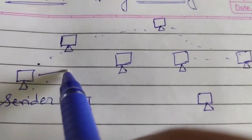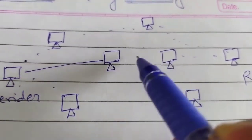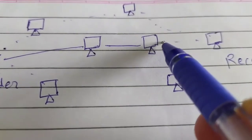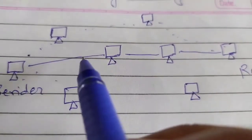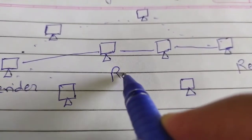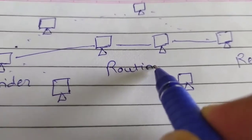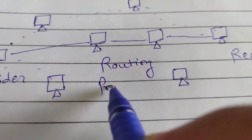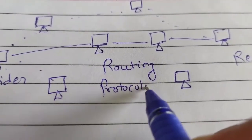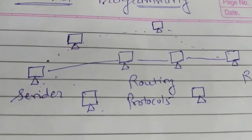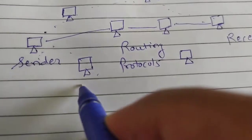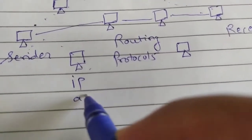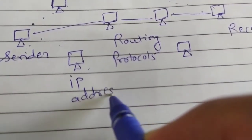That message goes to this node, then this node, and then to the receiver, following the network path. In between there are some routing protocols. By using these routing protocols, the message is passed to the receiver through the network. All these nodes have a special identity called an IP address.